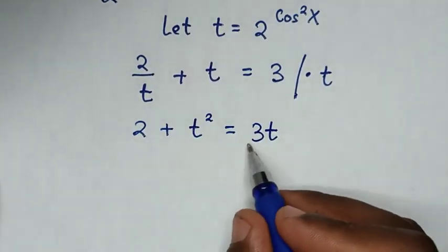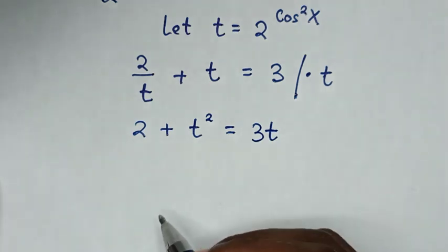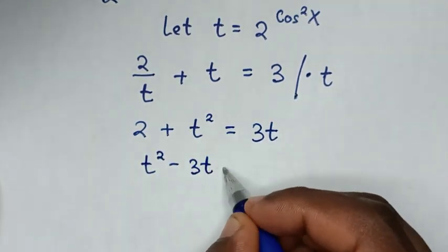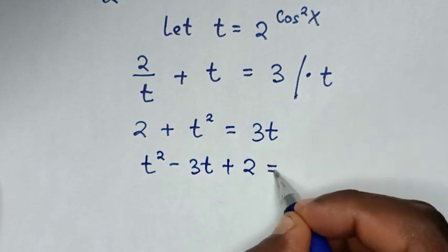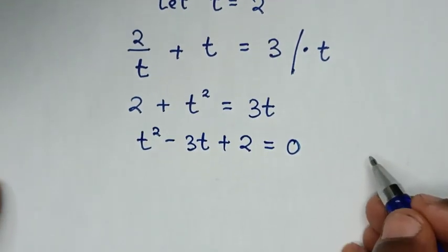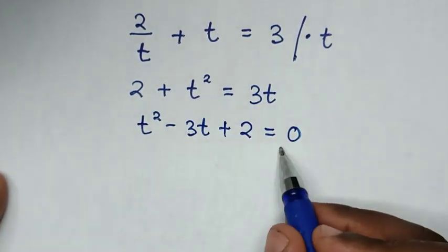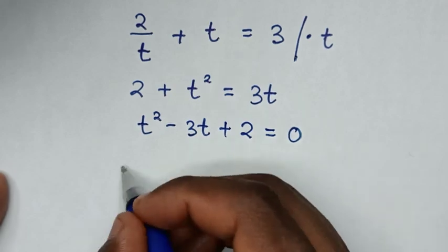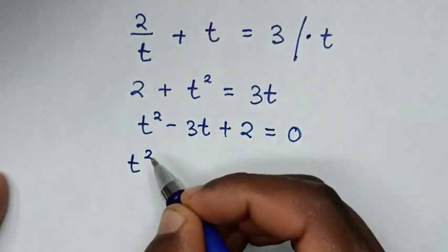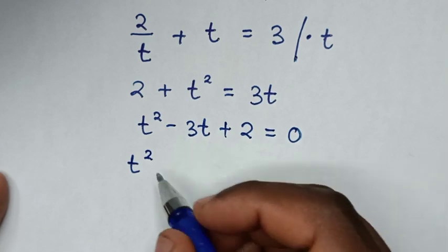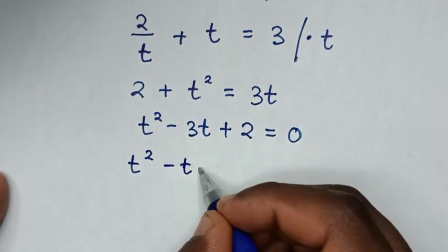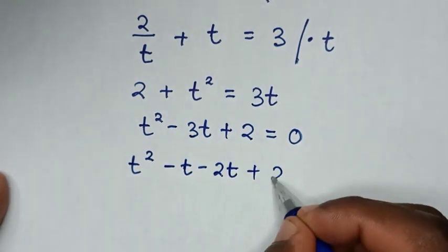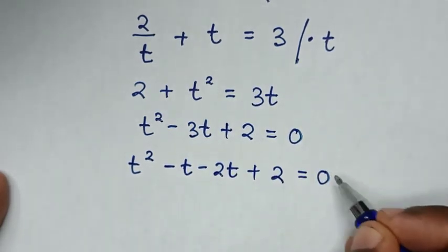We take 3t to the left side, so it becomes t² - 3t + 2 = 0. From this quadratic equation we solve by factorization. We split -3t as -t - 2t, so: t² - t - 2t + 2 = 0.